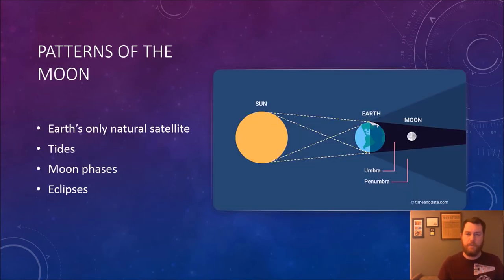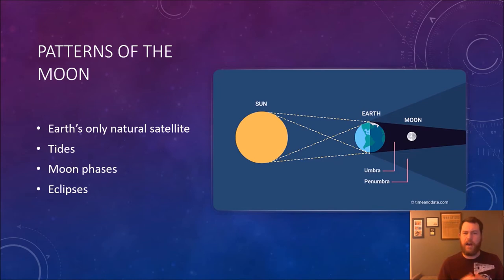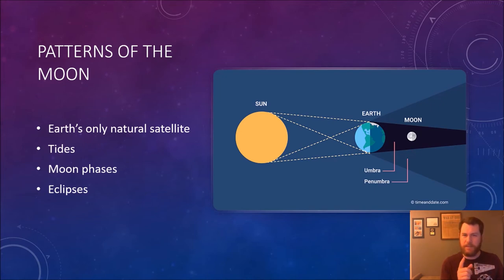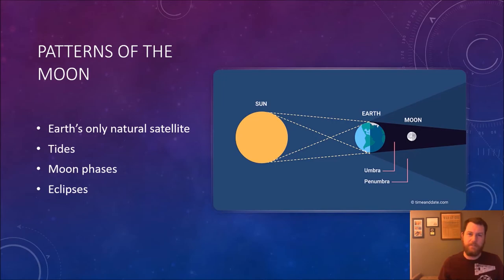As you watch this last video clip, think about what exactly the moon is and how it's a satellite. What does the moon have to do with tides? What are some of the phases of the moon? What is an eclipse? And since this lesson is about finding evidence that Earth has a spherical shape, think about what an eclipse has to do with that.